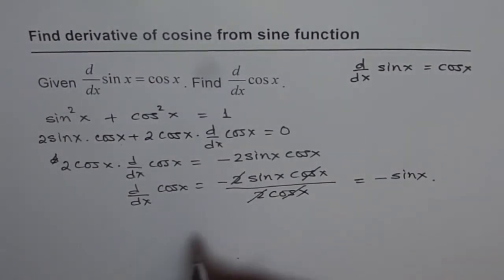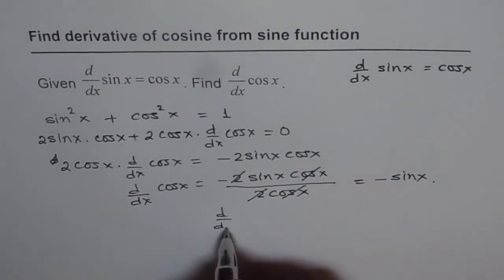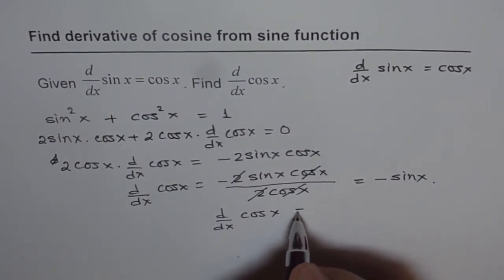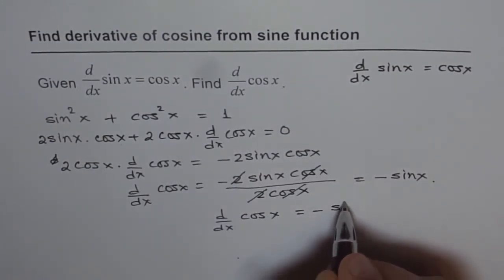So there we get our formula. That is, derivative of cos x with respect to x is equal to minus of sin x.